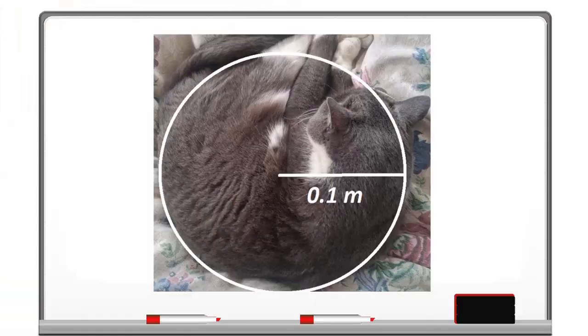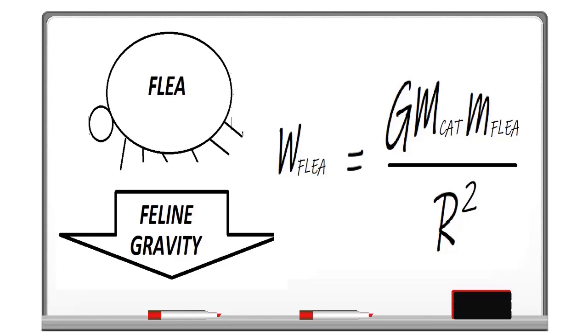Imagine a flea leaping from your cat. Assume that your cat has a mass of one kilogram and is perfectly spherical with a radius of 0.1 meters. We'll treat as negligible the mass of the earth, air resistance, and the laws of probability. On the surface of the cat, the flea has a weight which is given to us by Newton's law of gravitation.